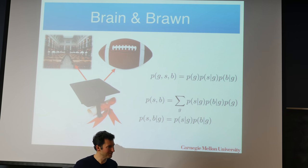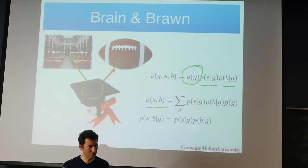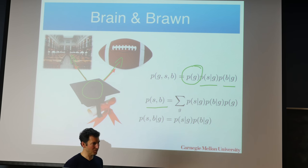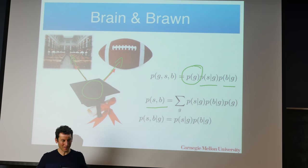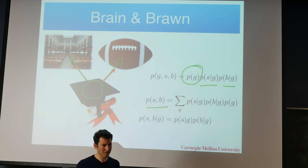Before, we assumed being smart and being strong were independent. Now we're assuming they are conditionally independent conditioned on graduation. So these are all modeling assumptions. There is a large branch of statistics which does nothing else but essentially infer the arcs in graphical models. CMU actually has a fantastic department for that — it's called the Department of Philosophy. The philosophers at CMU do math, graphical models, and statistics.